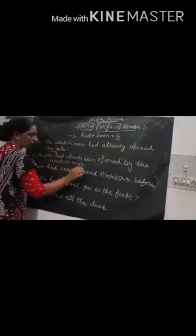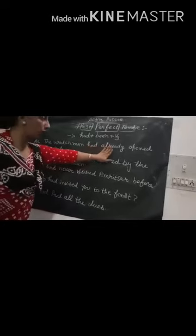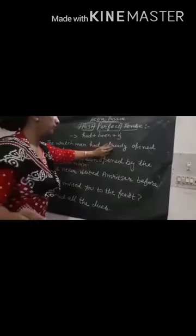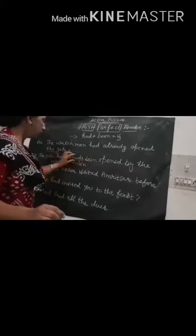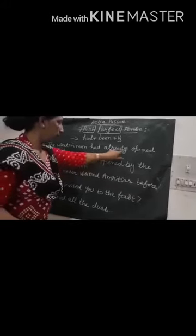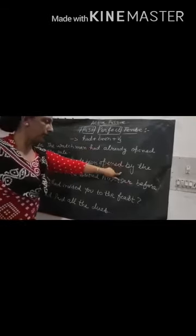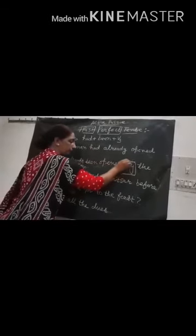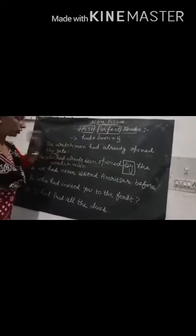This is very simple: had + been + such link words like 'already'. The word 'already' will come in between 'had' and 'been'. So: 'The gate had already been opened by the watchman.' In all sentences, the preposition 'by' is necessary — you have to put it yourself, as you will not find it in the question.